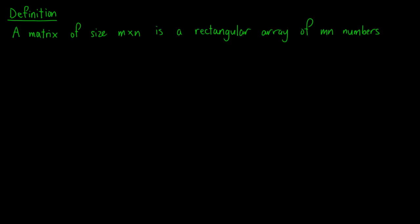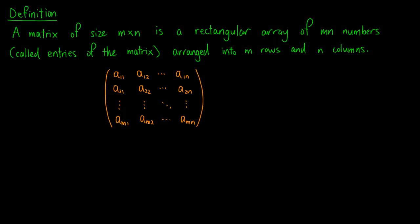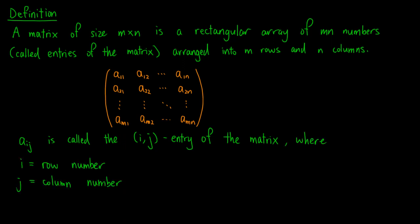We begin to talk about matrices on their own in this video. First, we give the formal definition of a matrix. A matrix of size m by n is a rectangular array of mn numbers called entries of the matrix, arranged into m rows and n columns. We use the symbol a subscript ij to denote the entries of a matrix, and it is called the ij entry of the matrix where i is the row number and j is the column number.